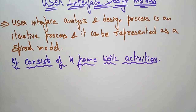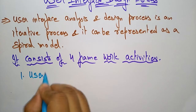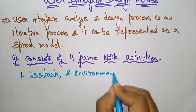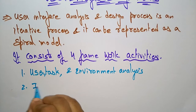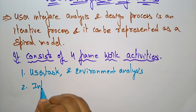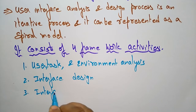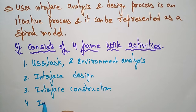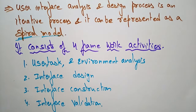The four framework activities present in user interface analysis and design, which are represented in the spiral model, are: first, user task and environment analysis; second, interface design; third, interface construction (also called implementation); and fourth, interface validation.